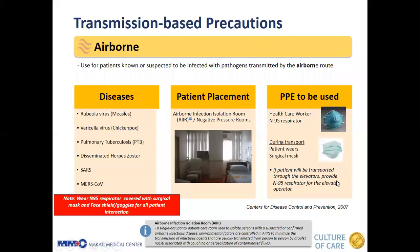For airborne precautions, airborne precaution is used for patients known or suspected to be infected with pathogens transmitted by the airborne route. Examples of diseases transmitted through airborne routes are measles or rubeola virus, varicella virus or chickenpox, pulmonary tuberculosis, disseminated herpes zoster, SARS or severe acute respiratory syndrome, and Middle East respiratory syndrome coronavirus.